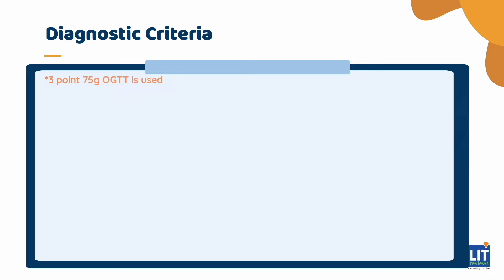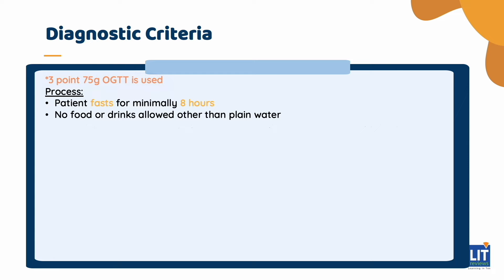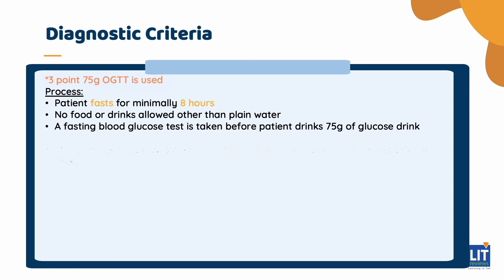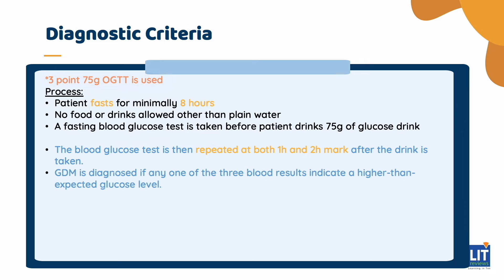Compared to the 2.75g 2-hour OGTT used to diagnose normal diabetes mellitus in the population, the 3.75g OGTT is used for GDM instead. The additional reading at the 1-hour point is important as it contributes to about one-third of GDM cases in Singapore and is clinically relevant to management of complications. The process includes fasting overnight for minimally 8 hours, with no food and drinks other than plain water. Subsequently, a fasting blood glucose is taken before the patient takes a standard 75g glucose drink. The blood glucose test is then repeated at both the 1-hour and 2-hour mark after the drink is taken.